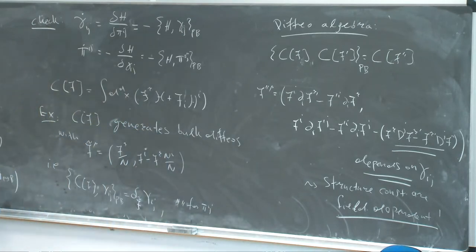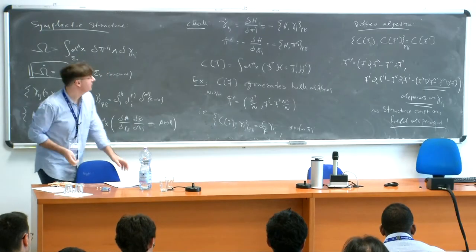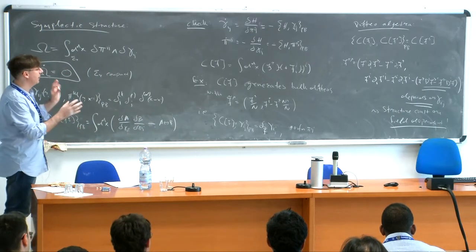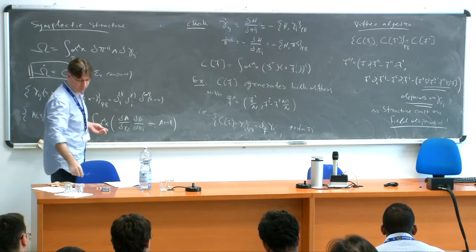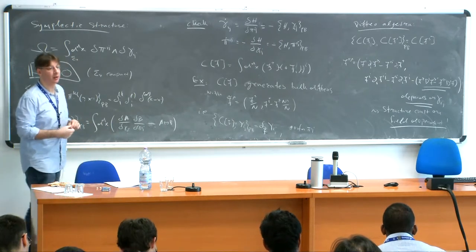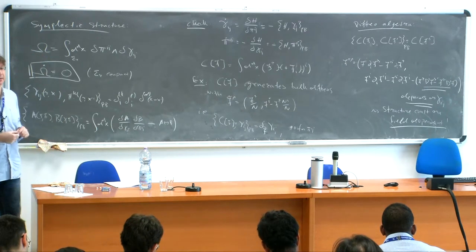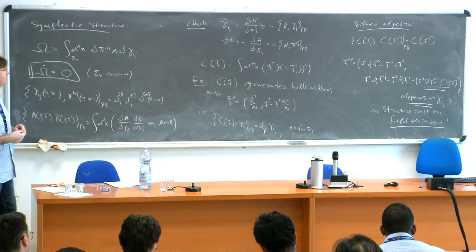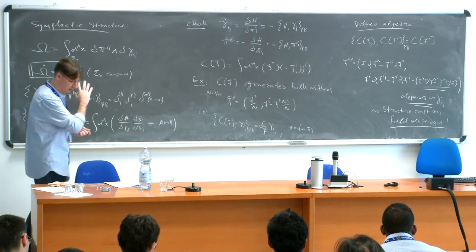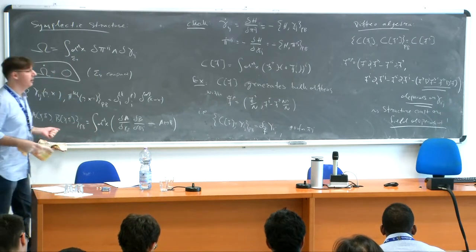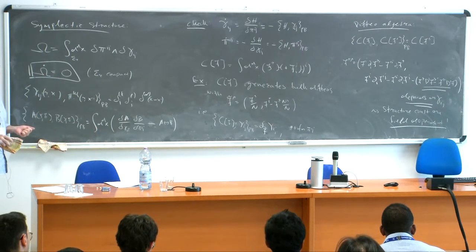I'm not going to discuss it more now, but we will see that we can bypass it in a way that I will mention. That's all I had to say about the generic Hamiltonian formulation of gravity. Next, I'm going to discuss asymptotically AdS supergravities — just pure gravity for now. Are there any questions?